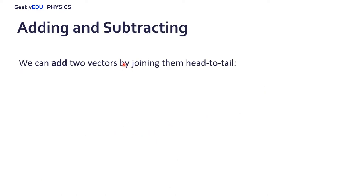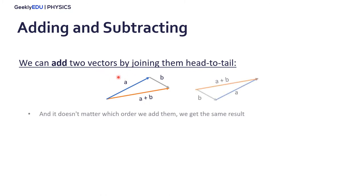So, how can we add and subtract vectors? Well, we can add two vectors by joining them head to tail. If you look at this example here, we have vector a and vector b. If we join them and trace another vector from a to the head of b, we have vector a plus b. Keep in mind that it doesn't matter in which order we add them, we get the same result.